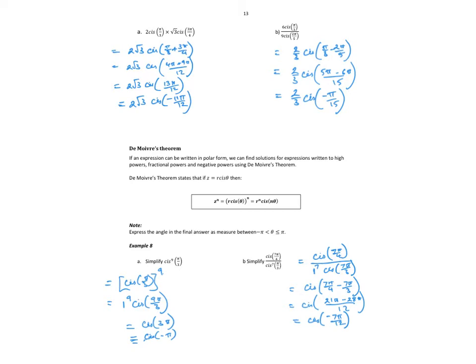So 2 cis π/3 times √3 cis 3π/4: 2 times √3 is 2√3, and we add our angles together. Don't forget common denominators - add the angles, so there's my 13π/12, which is a representation.